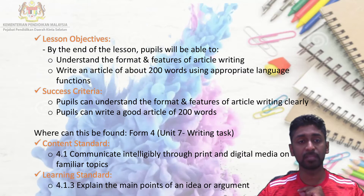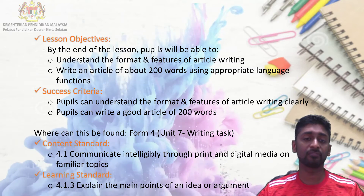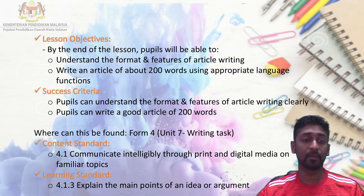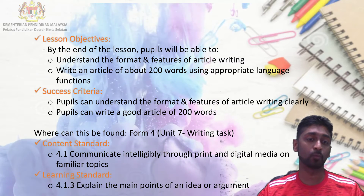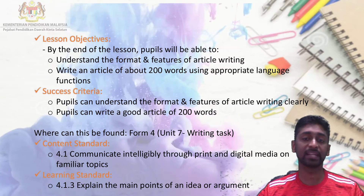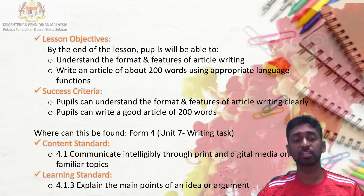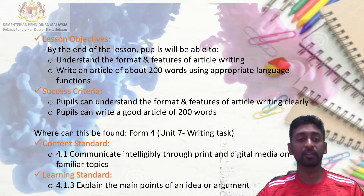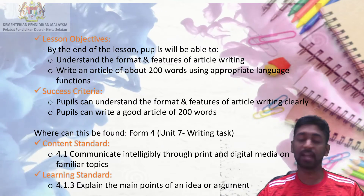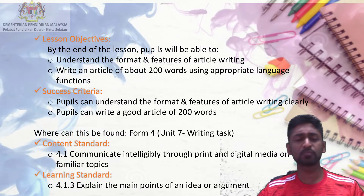If you wonder where to find article writing in the SPM syllabus, you can find it in Form 4 Unit 7, the writing task. The content standard used is 4.1 — to communicate intelligibly through print and digital media on familiar topics. The learning standard is 4.13 — to explain the main points of an argument or idea.